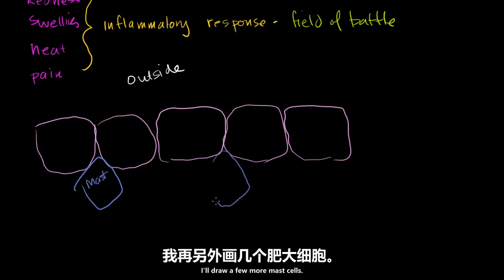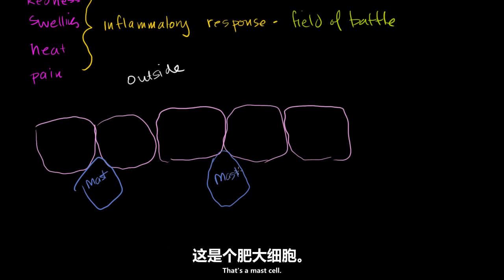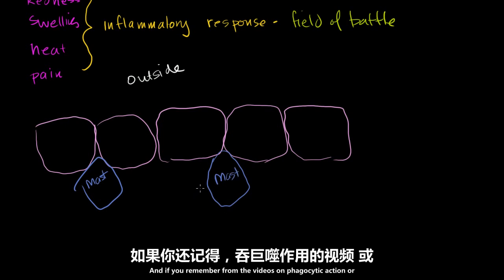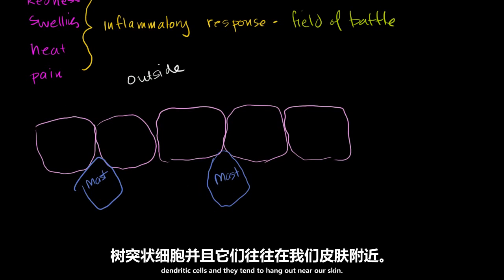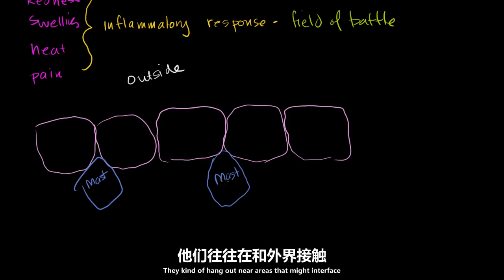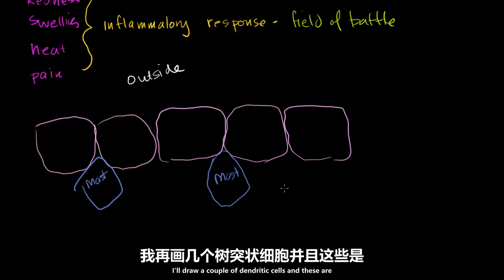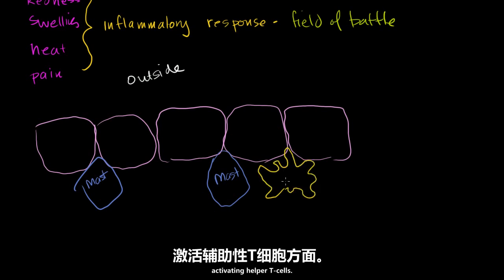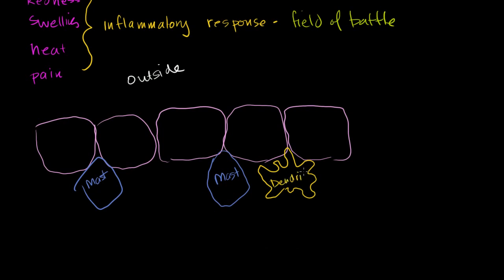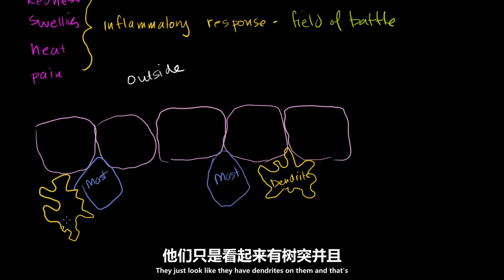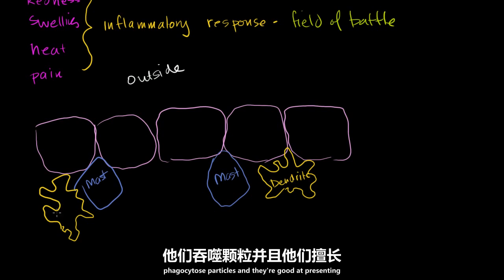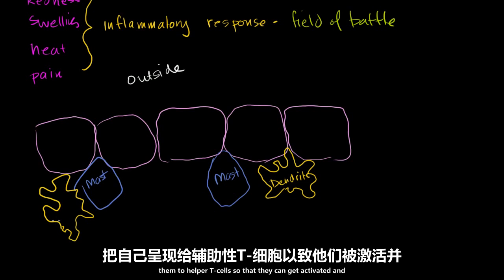I'll draw a few more mast cells. And if you remember from the videos on phagocytes, there's one type called dendritic cells and they tend to hang out near our skin — near areas that might interface with the outside world. These were also the ones that were really good at activating helper T cells. They're called dendritic cells because they look like they have dendrites on them, but they're really phagocytes. They phagocytose particles and are good at presenting them to helper T cells to get activated and ring the alarm bell.